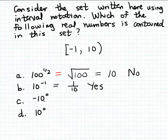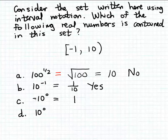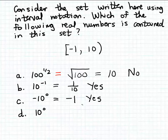Now let's look at part C: minus 10 to the 0th power. Recall that when you raise a base other than 0 to the 0th power, that equals 1. The minus sign is not raised to the 0th power — this is 10 raised to the 0th power, and then we apply the minus sign. So minus 10 to the 0th power equals minus 1. Now minus 1 is one of the boundary values, but the square bracket indicates that minus 1is included in the set. So minus 1 is part of this interval set.